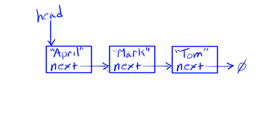Let's take a look at this linked list in a little more detail and see how it is in fact a recursive structure. This linked list is a three-node linked list, but you can also think of it as containing a smaller two-node linked list with Mark and Tom, and that two-node linked list containing another single-node linked list just containing Tom. So we have this larger structure composed of smaller structures of the same form — it really is a recursive structure.